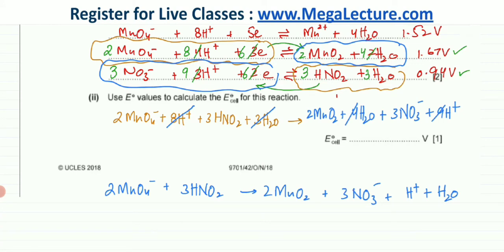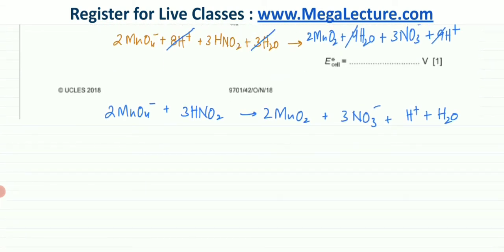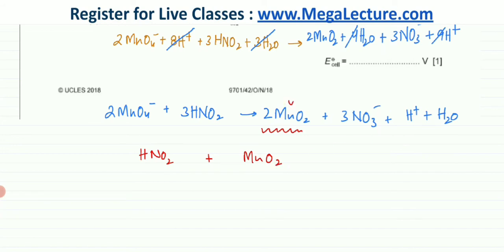However, this reaction does not end here, because the products formed — like MnO2 — might end up reacting again. I'm now going to figure out whether, if I keep adding HNO2, it would react with the MnO2 product. All the MnO4⁻ has been converted into MnO2. So the question is: if I keep adding HNO2, would it now react with the MnO2 that has been formed?